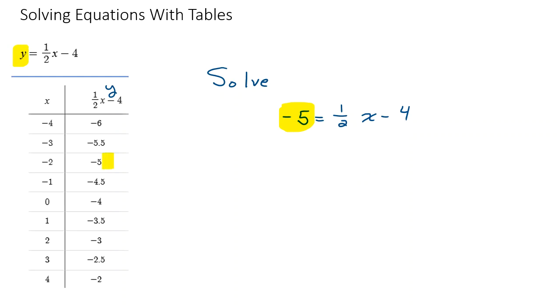that corresponds to this y value of the equation over here. So I'm just going to look down the table. Oh, there it is. There's y equal negative five. So I just look for the corresponding x value, which is negative two. And I have my solution. Easy peasy.